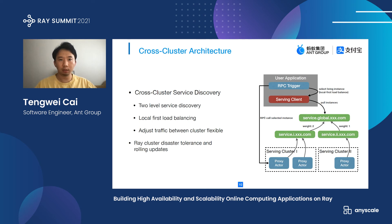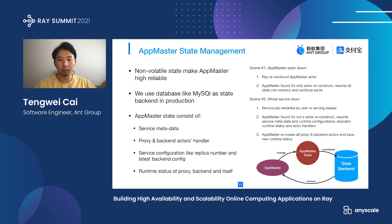Each AppMaster actor is responsible for managing all proxy and back-end actors in the current Ray job. AppMaster has a state management model which maintains the metadata, configuration, and status of this serving job. When key configuration and information are changed, it is persisted to an outside state backend. When the job is restarted, it recovers the application state from the outside data store, using key information such as service and reclusters.